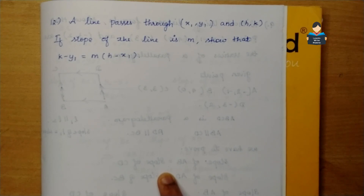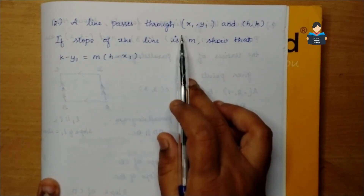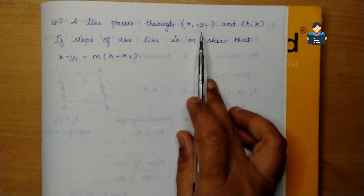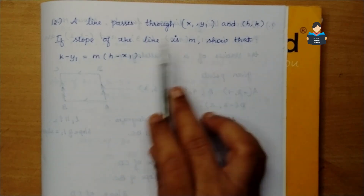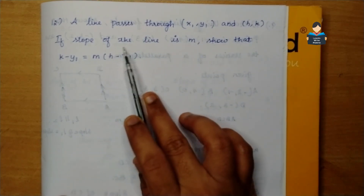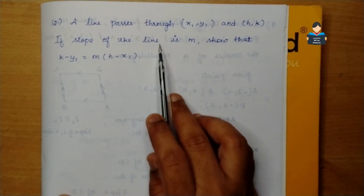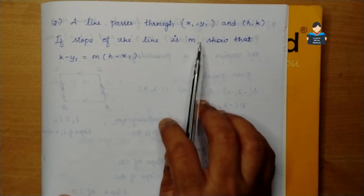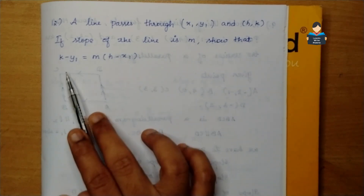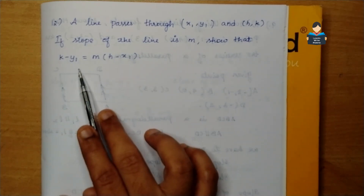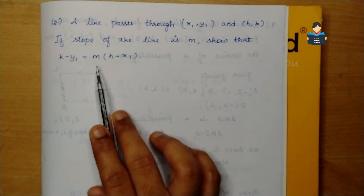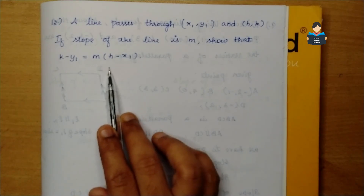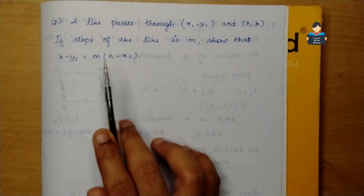A line passes through (x1, y1) and (h, k). If the slope of the line is m, show that k minus y1 is equal to m into h minus x1.